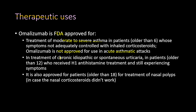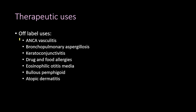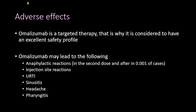Omalizumab is also FDA approved for treatment of chronic idiopathic or spontaneous urticaria in patients older than 12 years who receive H1 antihistamine treatment and still experience symptoms. It is also approved for patients older than 18 for treatment of nasal polyps when nasal corticosteroids have not worked. Off-label uses include ANCA vasculitis, bronchopulmonary aspergillosis, keratoconjunctivitis, drug and food allergies, eosinophilic otitis media, bullous pemphigoid, and atopic dermatitis.